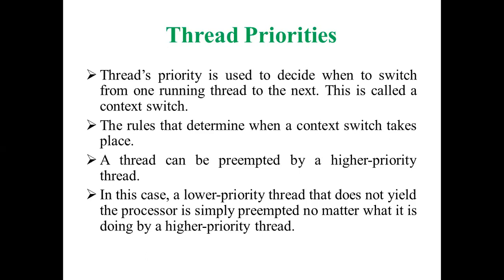The rules that determine when a context switch takes place: there is no hard-coded rule — only that high priority threads should be served compared to low priority threads. A thread can be preempted by a high priority thread. A lower priority thread that does not yield the processor is simply preempted no matter what it is doing. Higher priority threads preempt the execution of lower priority threads before completion of their task — this is the preemptive algorithm.